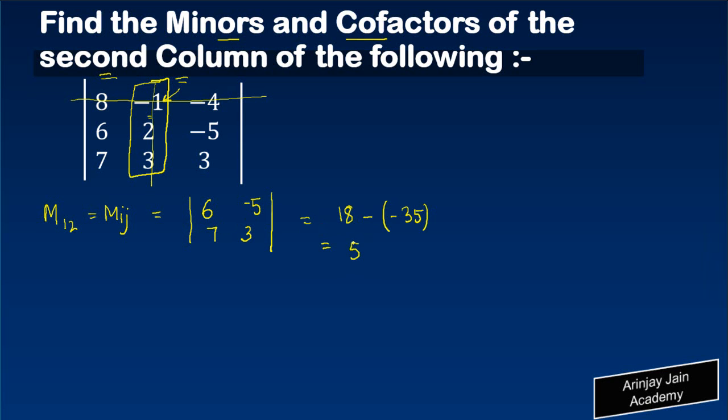In other words, the value is 18 plus 35 or 53. Let's come to the second element which is M second row second column or M_22.